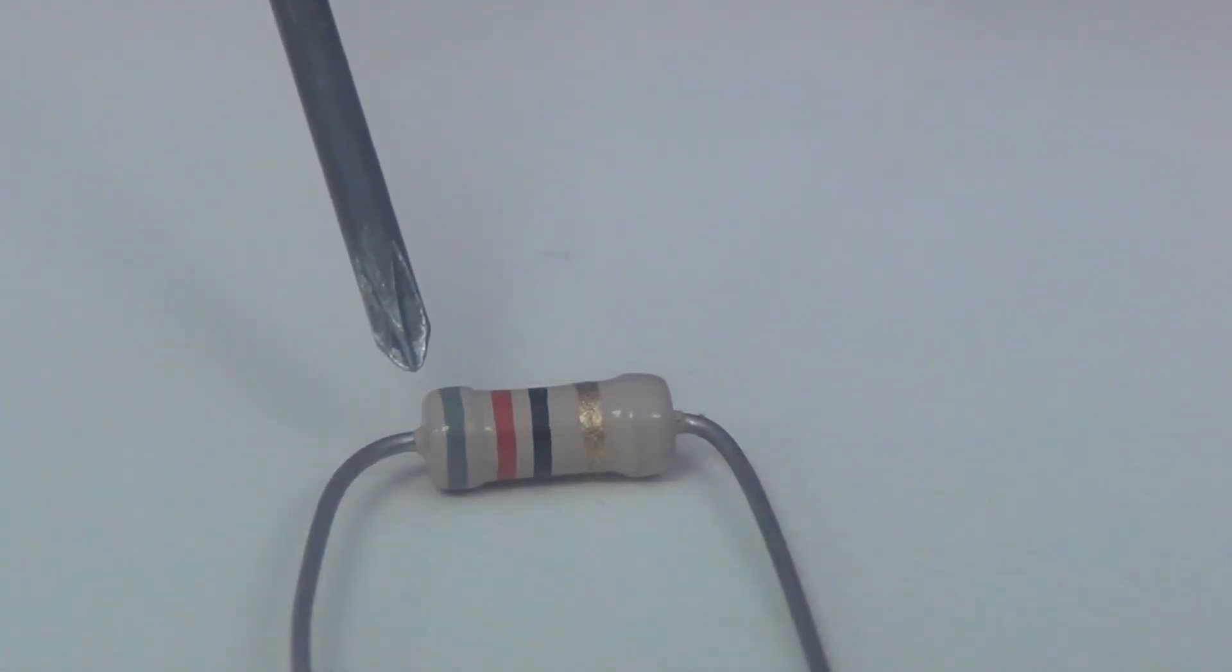With this color band, you have gray, which is 8, red is 2, and black means you have no zeros, so you have an 82 ohm resistor, and the gold represents 5% tolerance.